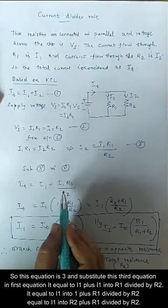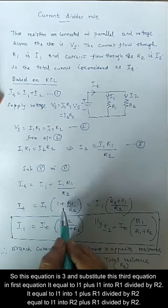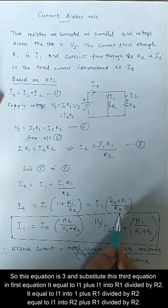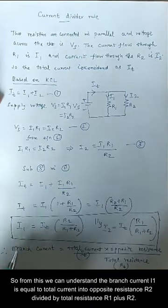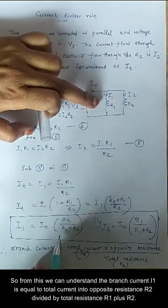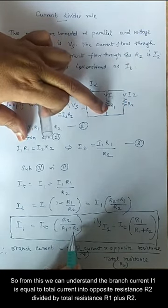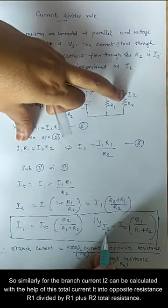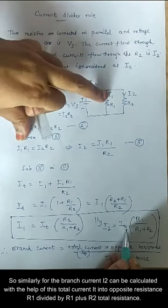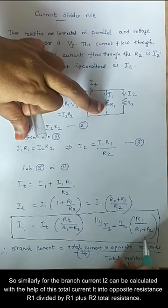The total current I equals I1 plus I1·R1 divided by R2. From this we can derive that branch current I1 equals total current multiplied by opposite resistance R2, divided by total resistance R1 plus R2. Similarly, branch current I2 equals total current multiplied by opposite resistance R1, divided by total resistance R1 plus R2.